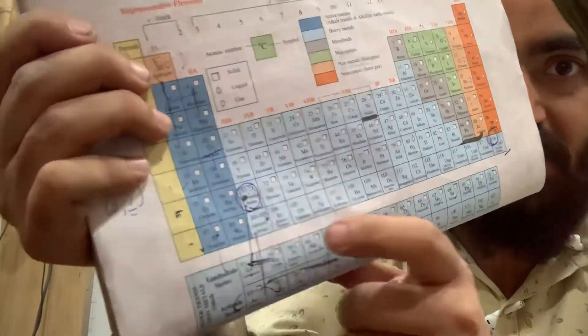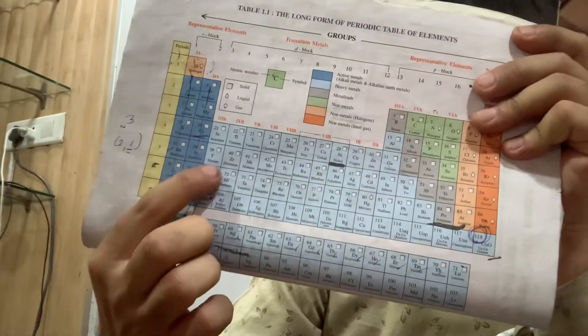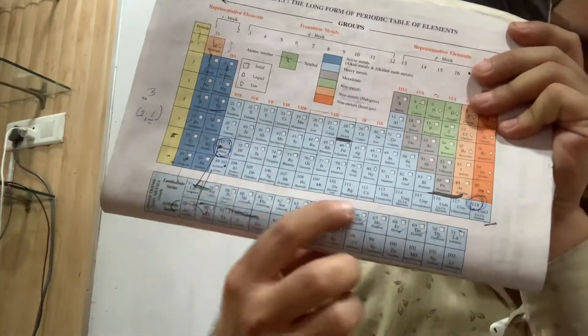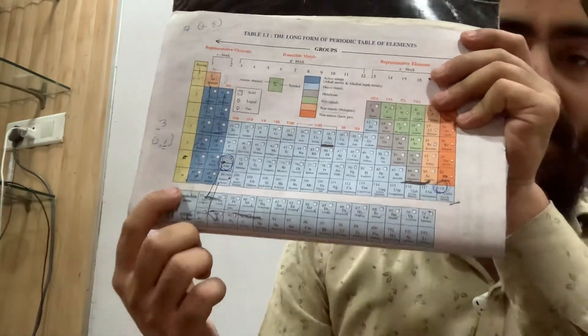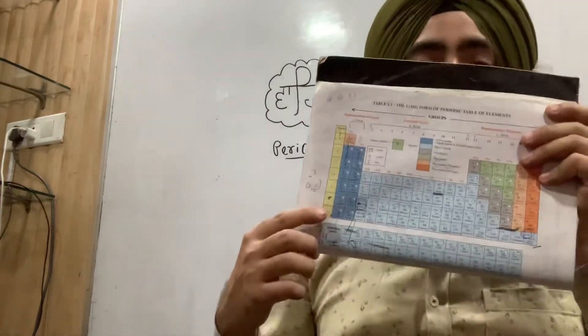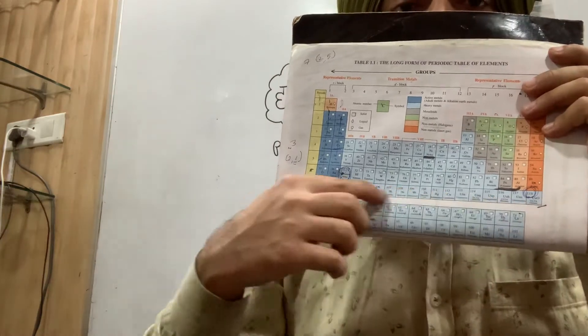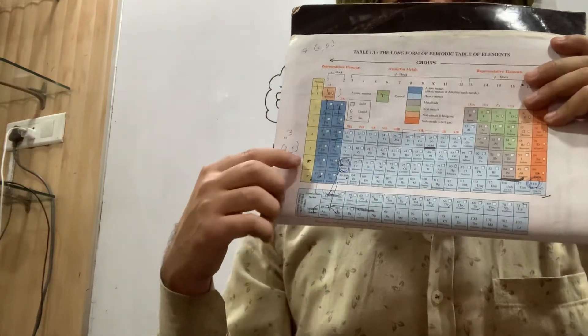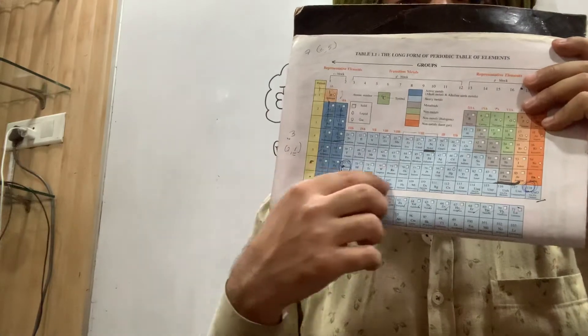The lanthanides run from atomic numbers 57 to 71. These are also called rare earth metals. Remember, the 7th period is incomplete, while the 6th period is complete. The 7th period is incomplete.